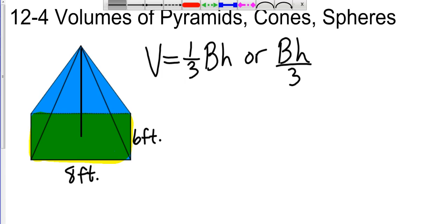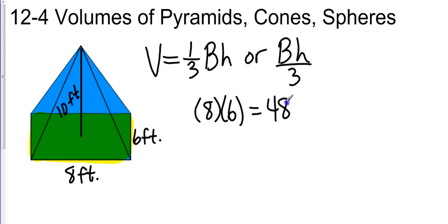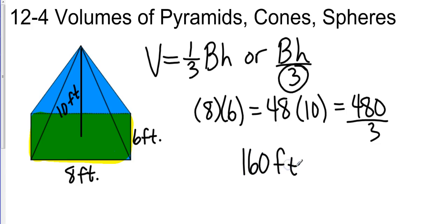And then let's say we have a height - let's call that ten feet. So what we're going to do is we're going to find the area first, so that's going to be eight times six, which gives us 48. And then we're going to take that times the height, which is 10, and that gives us 480. And now we take the whole thing and divide it by 3, so 3 into 480 is going to be 160 cubic feet.